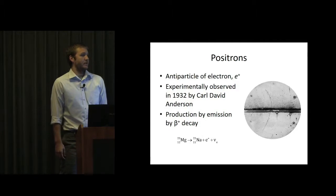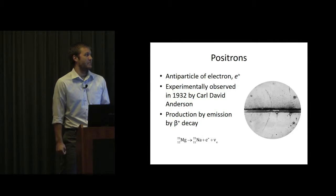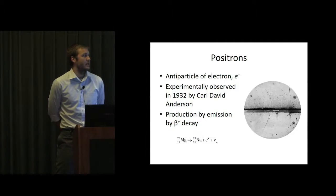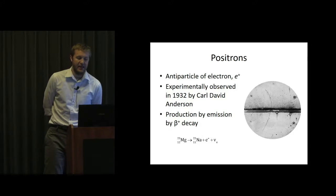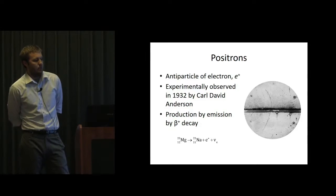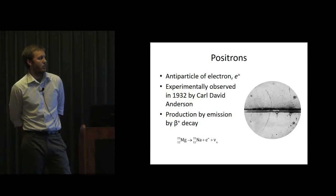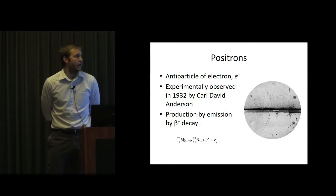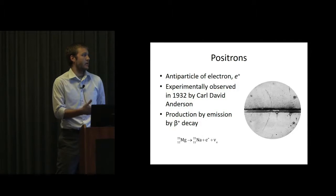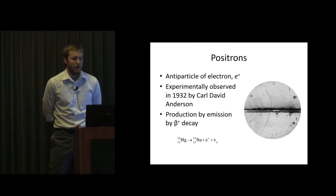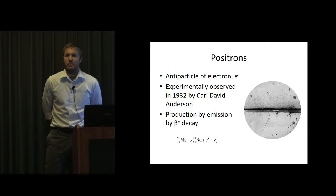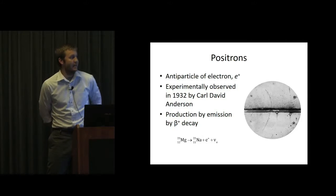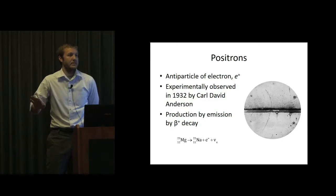So where we get positrons from experimentally and for applications, well, you can get them from two places. But as far as applications, you normally get them from production by emission from beta decay. So here we have a proton decaying into a neutron where we also get a positron and electron neutrino. So we have magnesium-23 here going to sodium-23 with production of a positron and that electron neutrino. You can also get them from pair production from highly energetic photons from cosmic rays. And I think that's how this photograph was originally observed, but we're not going to be interested in that type of production at all.